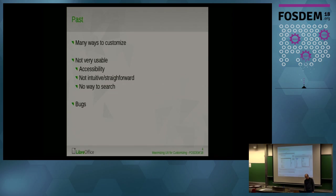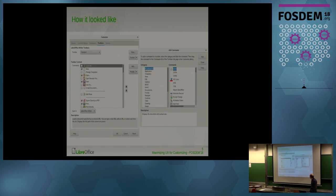Let me show you what it looked like in the past. You see it provided everything you need to configure and customize LibreOffice, but it was a little outdated. For example, you can't find what you are looking for. If you want to add something to a toolbar — a new button — you click the add button, a new dialog opens, and you have to go through all of them to find what you are looking for.